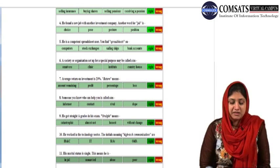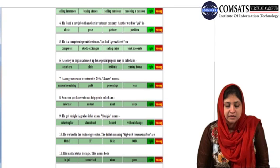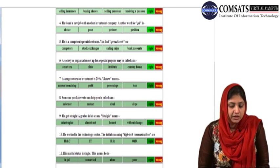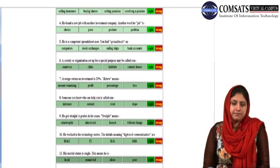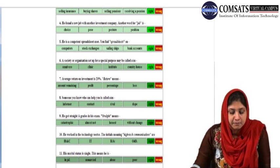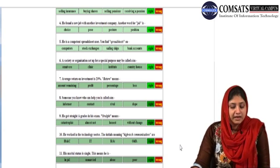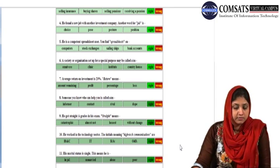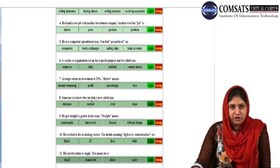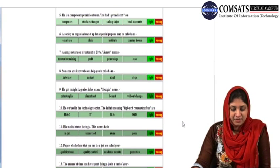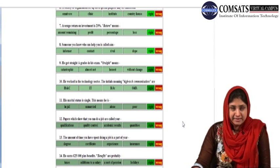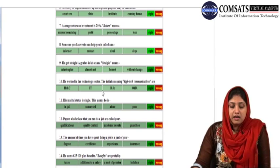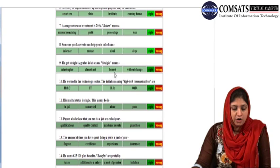Average return on investment is 20%. 20% return means profit. Someone you know who can help you is called a contact. He got straight A grades in his exams. Straight means without change. That's right.